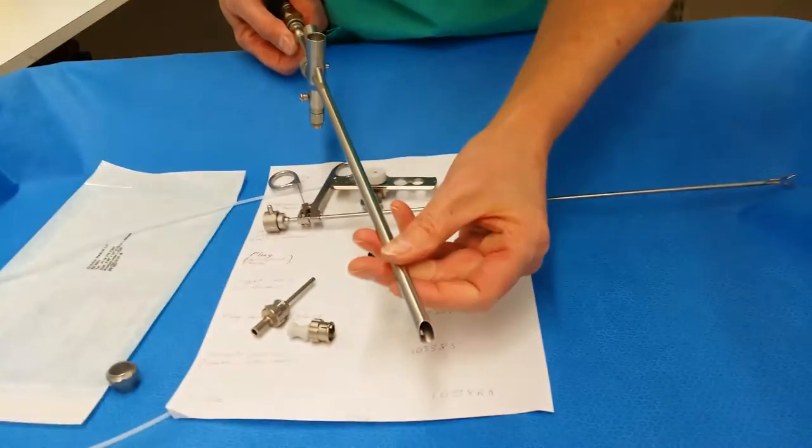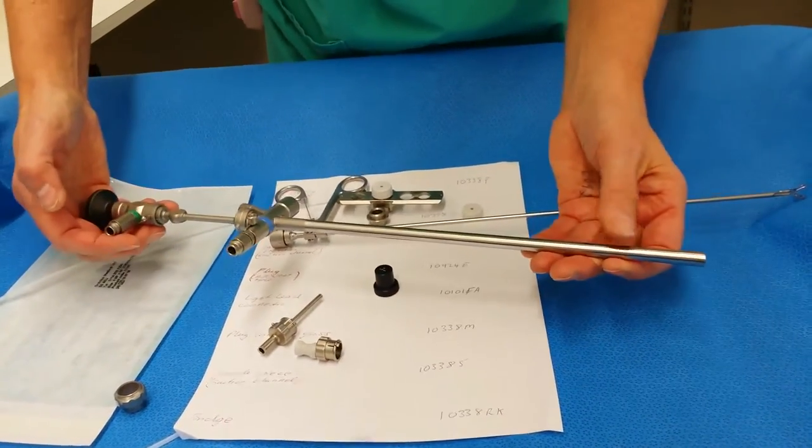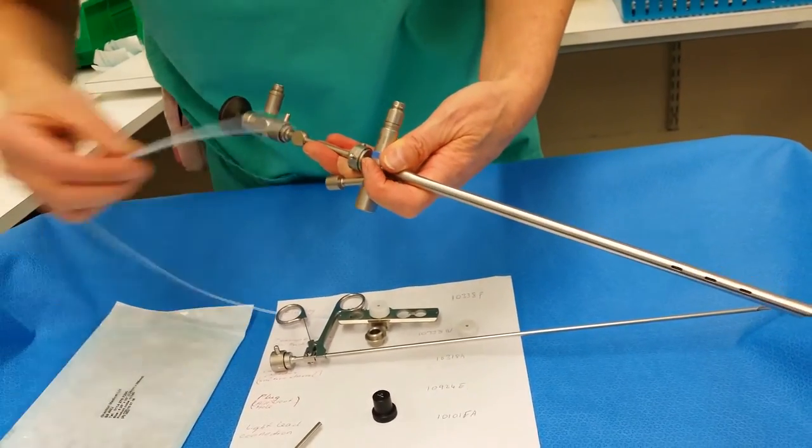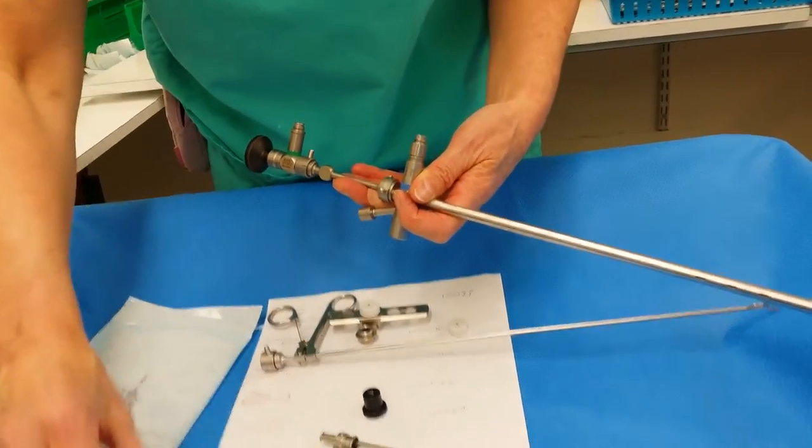So the surgeon can get a good view initially. You can see the scope is just at the end there, and the light lead would be attached there.